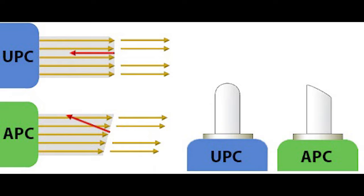UPC is popular in digital TV, telephony, and data systems. One thing that should be noted is that APC and UPC connectors cannot and should not be mated. Not only does this cause poor performance, but it can also destroy both connectors — the last thing you want to do is cause permanent damage.